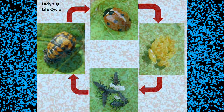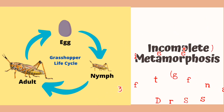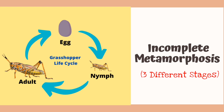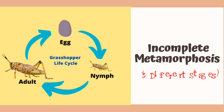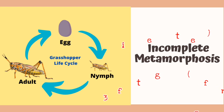Number two: incomplete metamorphosis. Some insects, like dragonflies, grasshoppers, and cicadas, go through an incomplete metamorphosis. After hatching, these insects will look like their parents. They will go through changes as they grow, but the way they look will not change much. During an incomplete metamorphosis, an animal will go through three different stages in its life cycle.